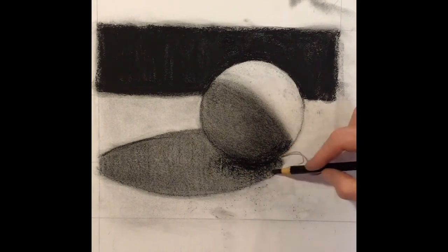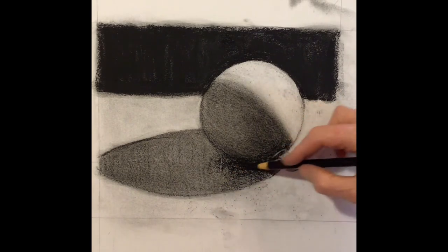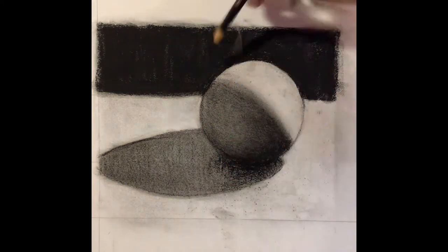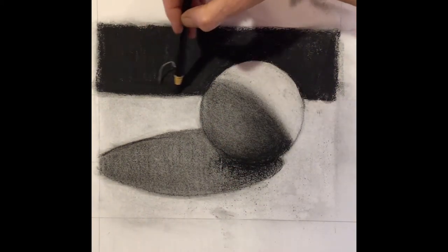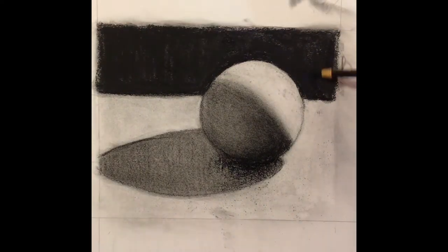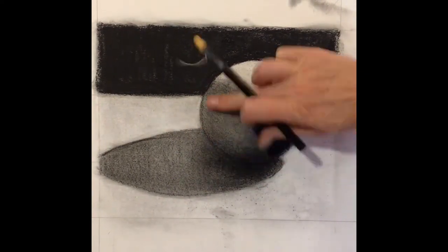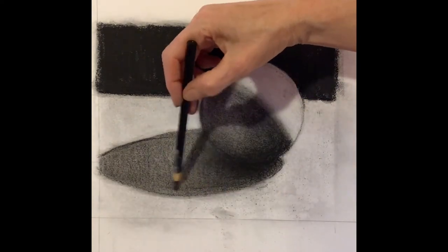Now I'm adding in that occlusion shadow. Again, this is generally the darkest place. It's where the light just don't shine. The light can't get in there because it's too obscured. So that's where you're going to have the darkest dark.